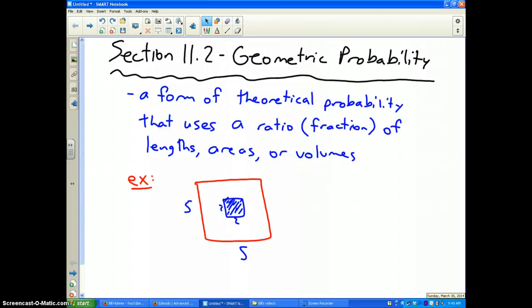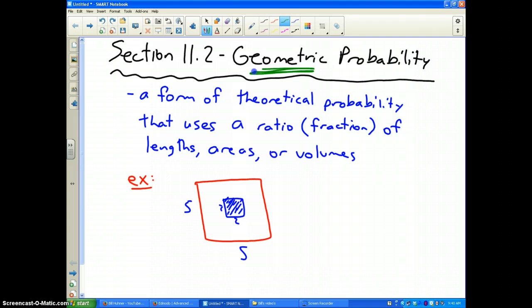The second part of section 11.2 deals with geometric probability. Geometric obviously means dealing with shapes. Very important for those of you juniors, especially if you're going to be taking the ACT soon or your college entrance exams.